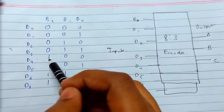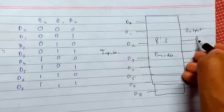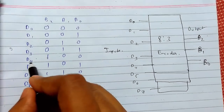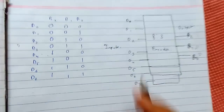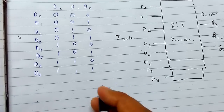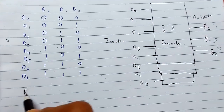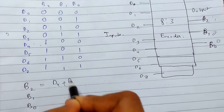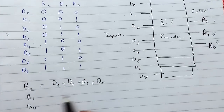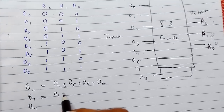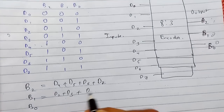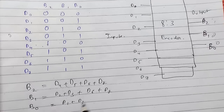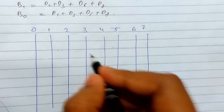The output columns are labeled b2, b1, and b0. So if you select d4, the output will be 1, 0, 0. Now we find the Boolean expressions: b2 equals d4 plus d5 plus d6 plus d7; b1 equals d2 plus d3 plus d6 plus d7; and b0 equals d1 plus d3 plus d5 plus d7.